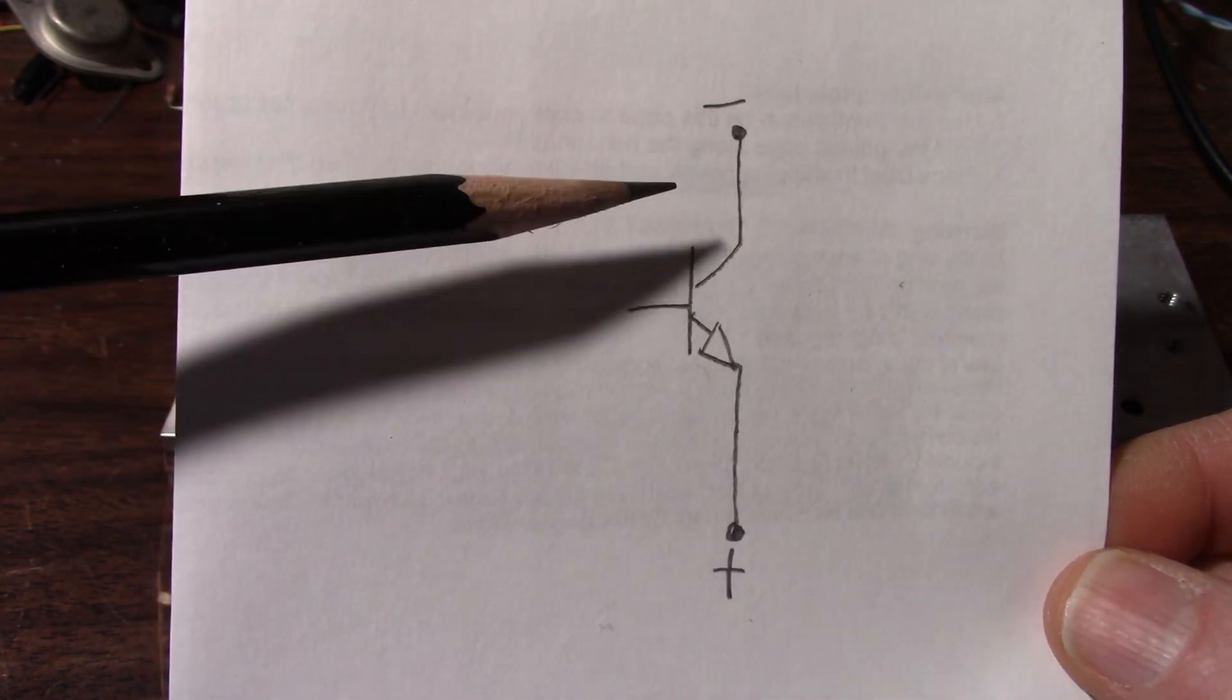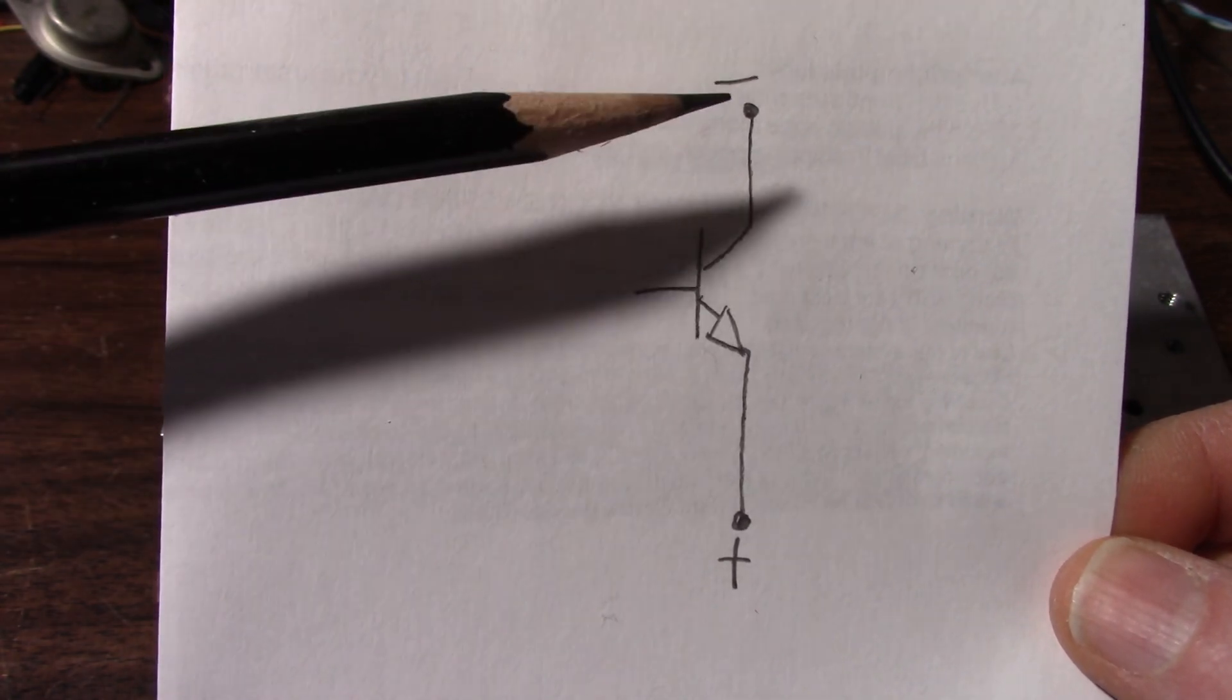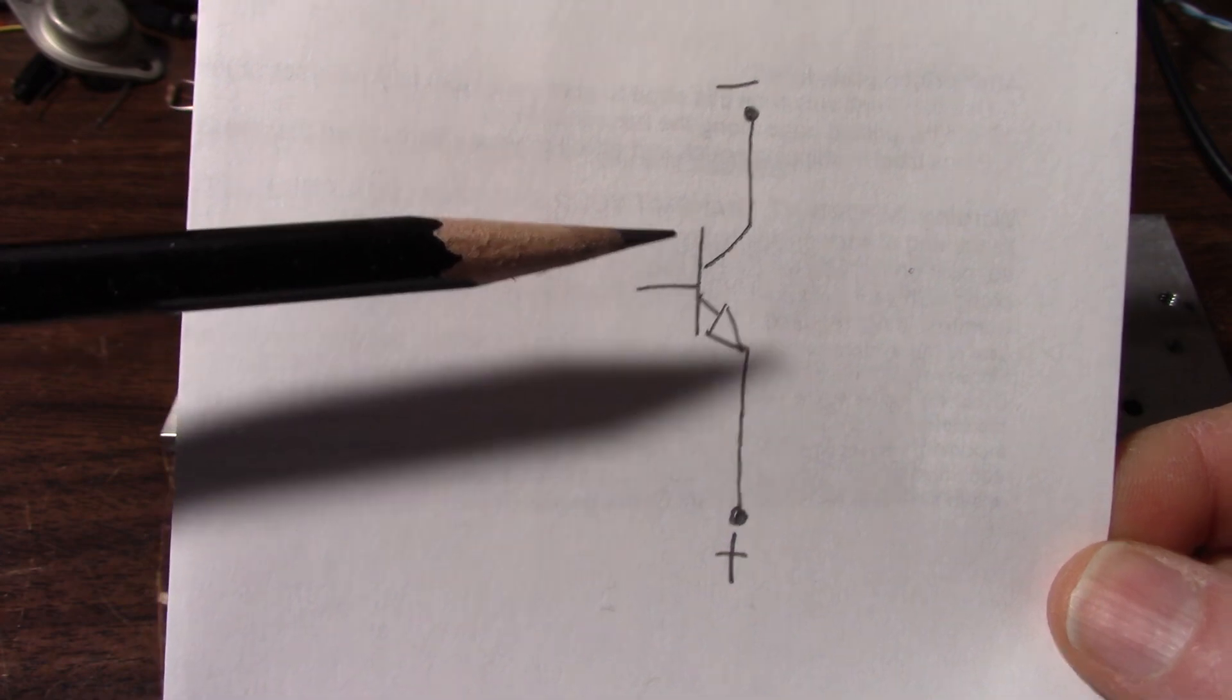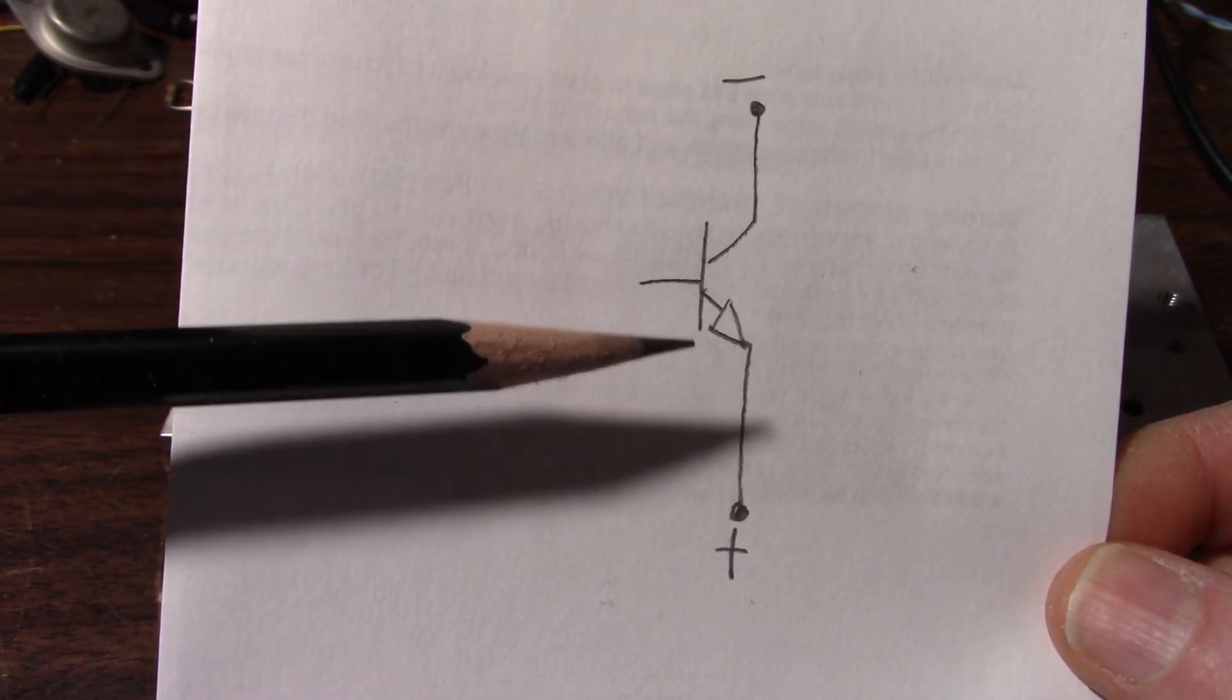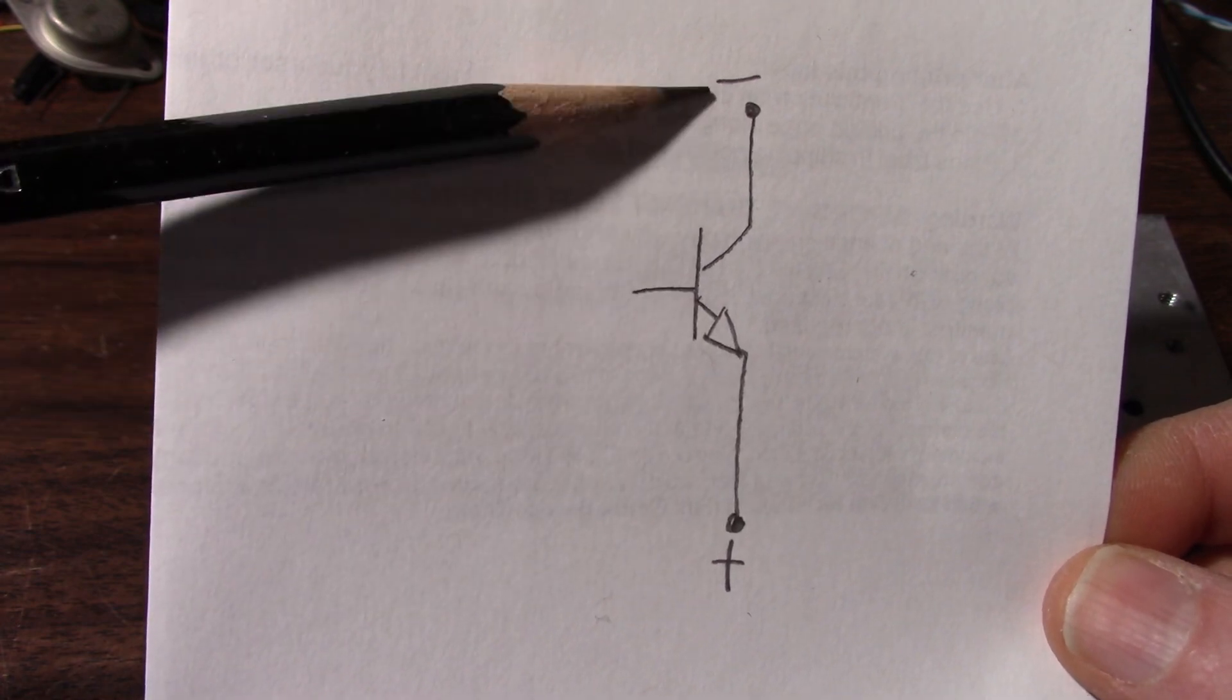So like I say I hook this up in reverse, the base is not connected, and turn up the supply and depending on the transistor somewhere around 12 volts or so it'll start to conduct.